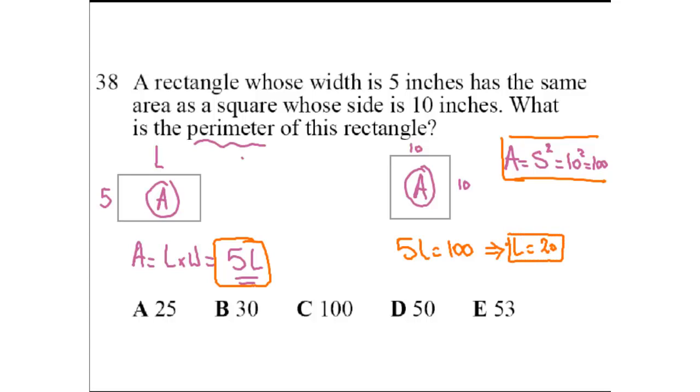So the length of this rectangle is 20. Now what? The question says, what is the perimeter of the rectangle? What is the perimeter of a rectangle? It is the length plus the width, plus the length, plus the width. Or it's 2 times the length plus the width. So it's 2 times. The length we got is 20. The width we already know is 5. So it's 2 times 25, which is 50. So the answer is D. Of course, this square and this rectangle are not drawn to scale.